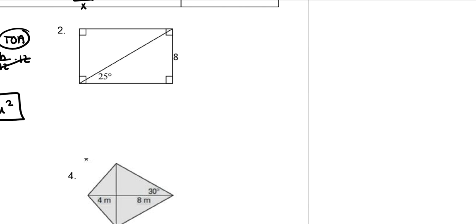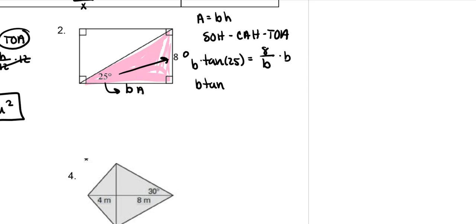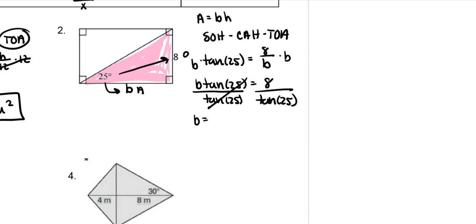On this one, we have a rectangle. For a rectangle we need base times height, or length times width. We need to find this length here, so we focus on this triangle. This side is opposite, this is adjacent — that's tangent. The tangent of 25 equals opposite over adjacent, so 8 over B. Multiply by B on both sides, then move the tangent of 25 to the other side. Put it in your calculator: 8 divided by the tangent of 25 gives you 17.2, because it's 17.156.